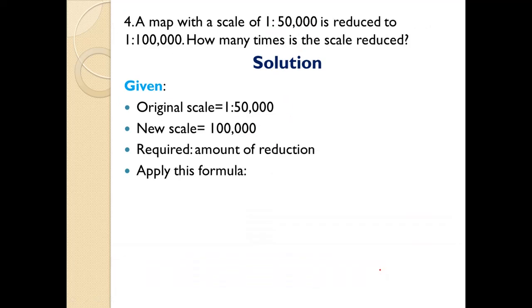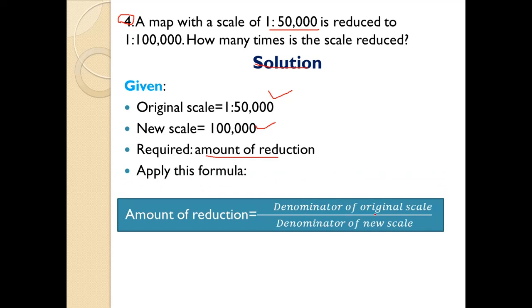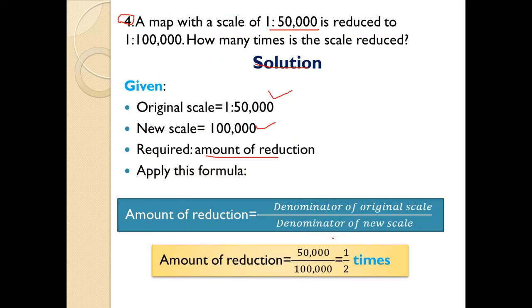Question number four: A map with a scale of 1:50,000 is reduced to a map with a scale of 1:100,000. How many times is the scale reduced? To calculate the amount of reduction, apply this formula: amount of reduction equals denominator of original scale divided by denominator of new scale. So amount of reduction equals 50,000 divided by 100,000.